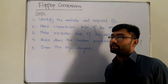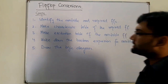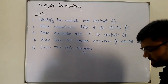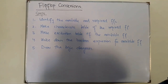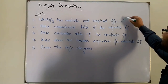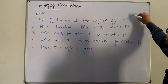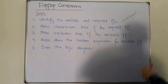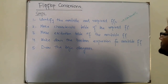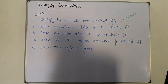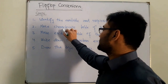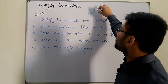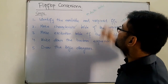So these are the five steps if you have one flip-flop and you want to use it as another. Step one — identify the available and required flip-flop — comes directly from the problem statement. Step two is to make the characteristic table of the required flip-flop, which is made with the help of the truth table.